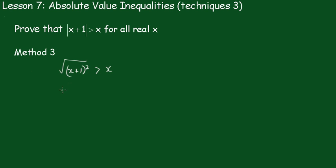And we'll go ahead and we'll square both sides. And we'll get x plus 1 all squared is greater than x squared. That's squaring both sides.